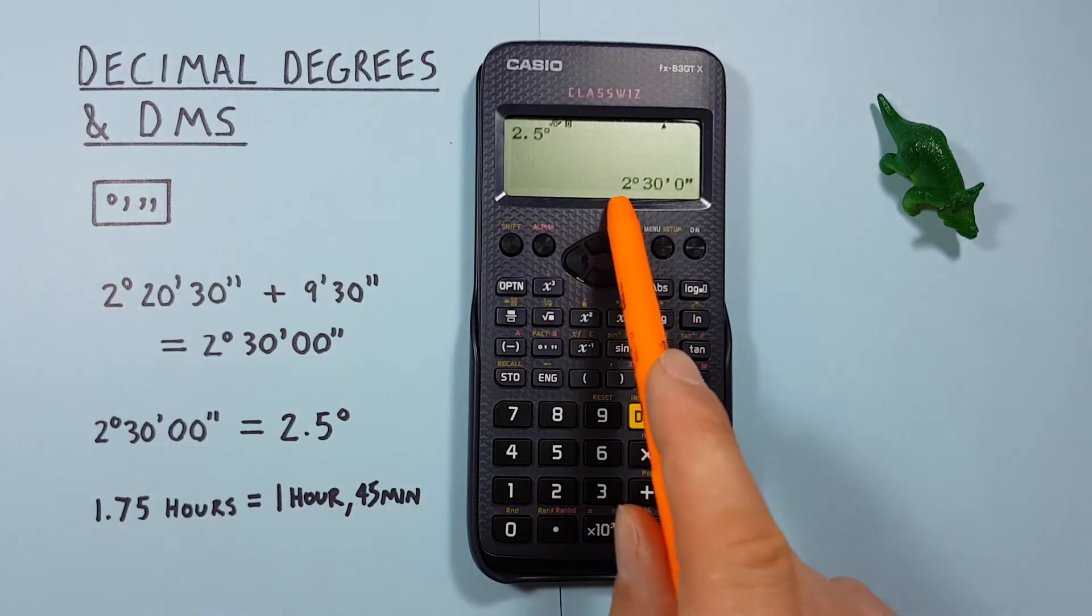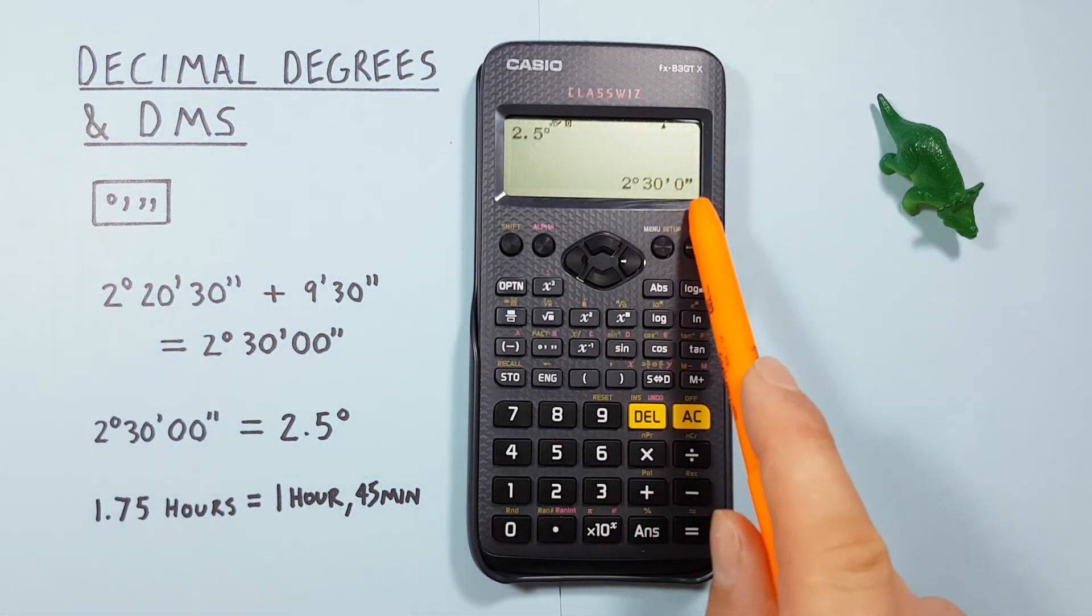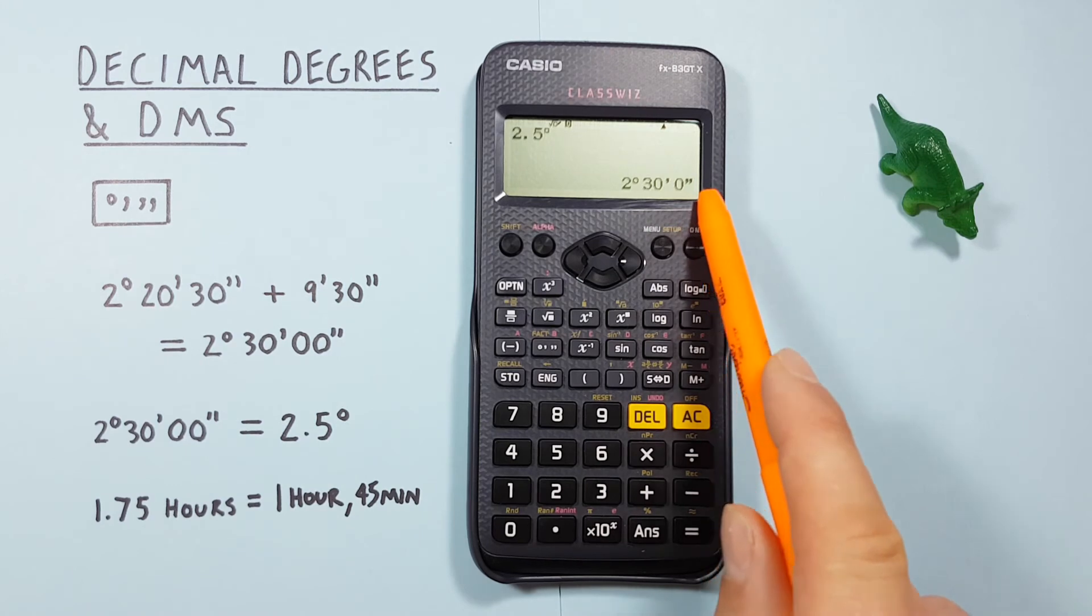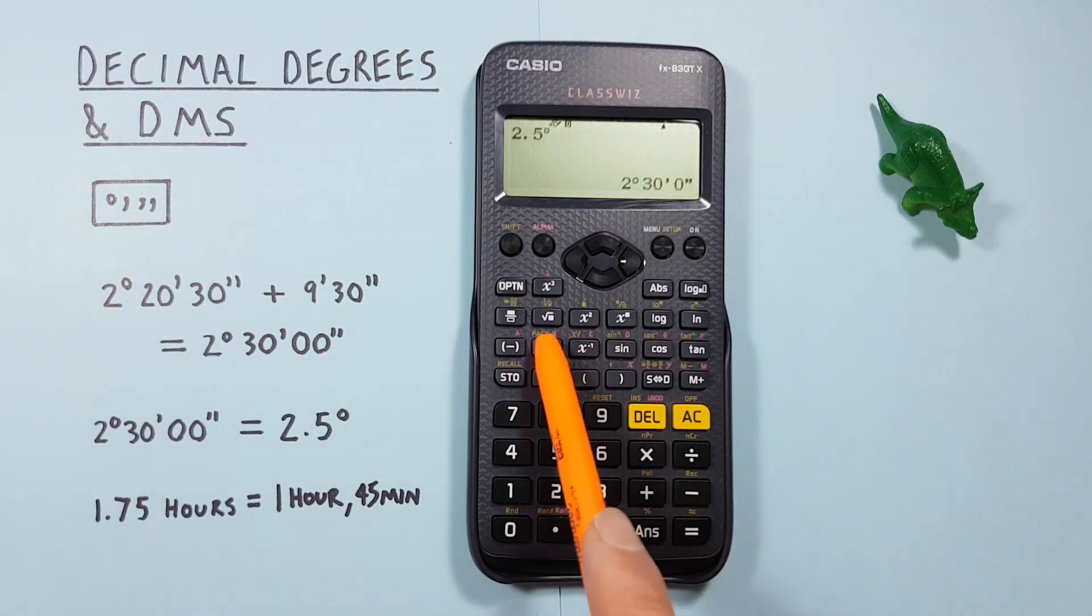And we see it gives us 2 degrees 30 minutes 0 seconds, which is correct. And again we can convert that back and forth with the degrees minutes seconds key.